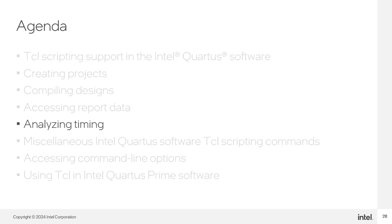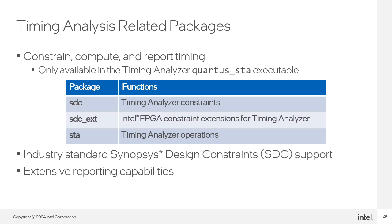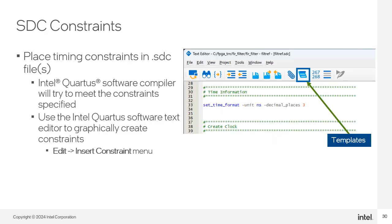Now let's look at how to create timing reports and gather detailed timing information for specific paths using TCL and the Timing Analyzer command line executable. The timing-related TCL packages provide a way to constrain and perform detailed timing analysis on your design. All of these packages are only available with the Timing Analyzer quartus_sta executable. Timing Analyzer supports industry standard SDC timing constraints with the SDC package. The SDC extended package adds Intel FPGA extensions to the SDC standard, and the STA package includes commands to create timing netlists, read SDC files, and run detailed reports.